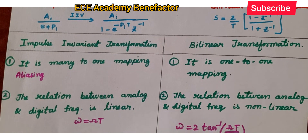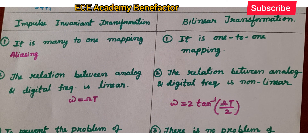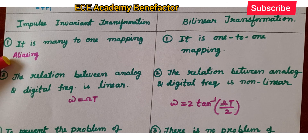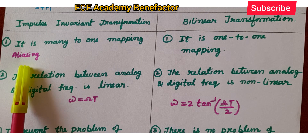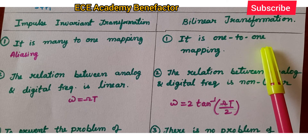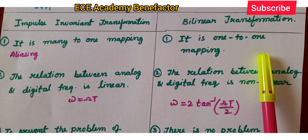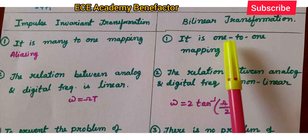Coming to the comparison of impulse invariant and bilinear transformation: the first point under impulse invariant is that it is a many-to-one mapping, which is known as the aliasing effect. Aliasing is a drawback of the impulse invariant method. Under bilinear transformation, the first point is that it is one-to-one mapping, so there is no aliasing effect in bilinear transformation. Impulse invariant is many-to-one; bilinear transformation is one-to-one mapping.